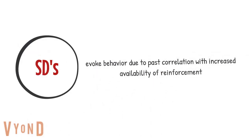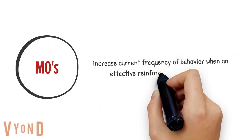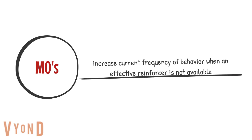SDs, or discriminative stimulus, tell the learner that reinforcement is available when they exhibit a particular behavior, and they've made that connection based on history of reinforcement. And manipulating motivating operations, or MOs, can also increase the frequency of the behavior. So we're talking about satiation and deprivation.